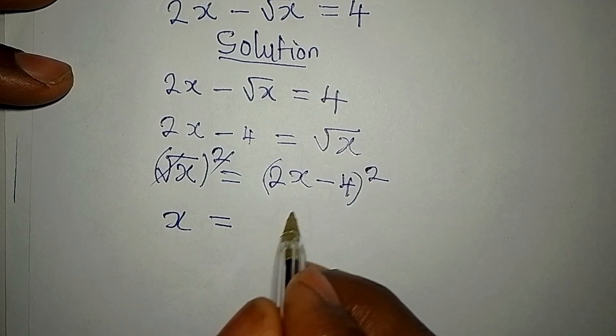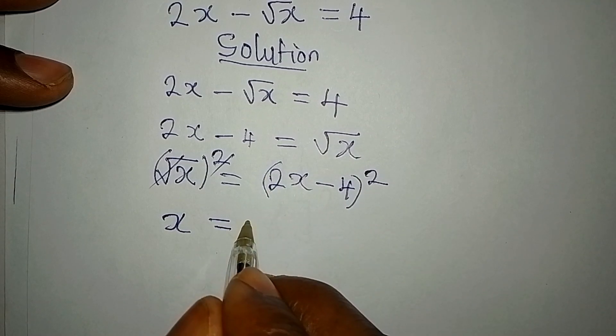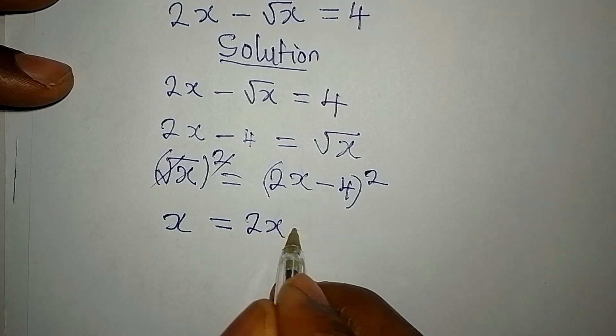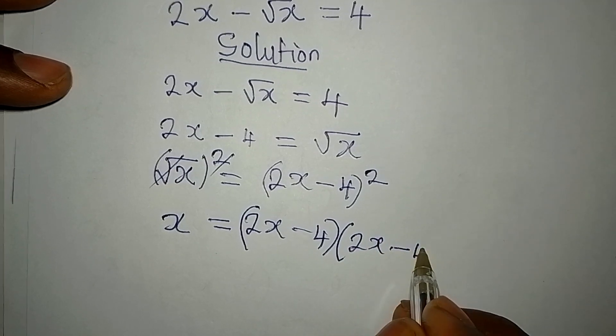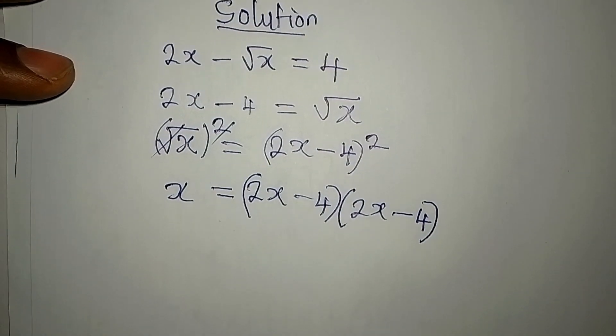If I were you, I would just open it. I would expand it this way: 2x minus 4 in two places. So we'll open this. I think it's better this way.